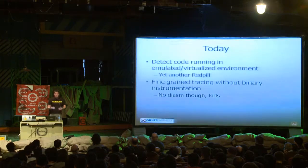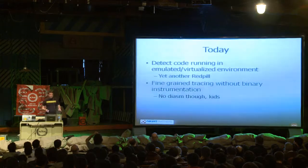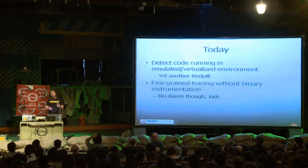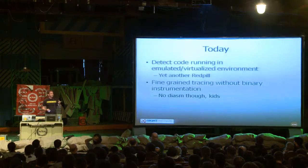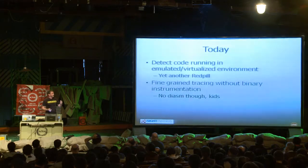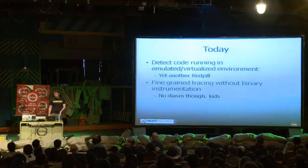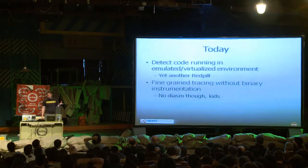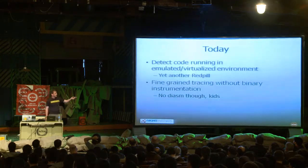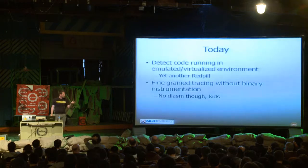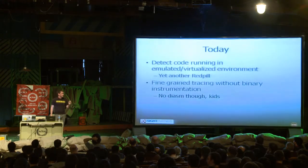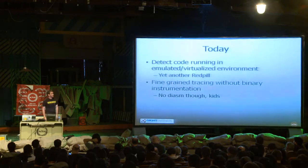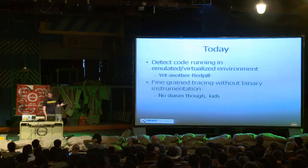So today, what we're going to talk about — what I'm actually here for. I'm going to do two things. First, I'll give you yet another red pill — another instruction you can use to detect if you're running in a VM or emulated environment. Second, we're going to talk about how to do tracing stealthily with MSRs without modifying the binary you're tracing. Through my technique, you don't get disassembly — just the linear address the code took as it executed — but it's very fast, faster than anything else I've seen published.